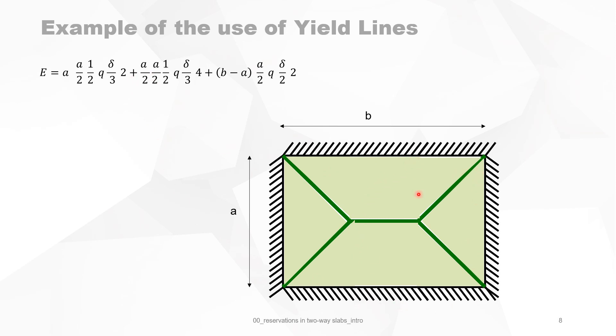What is left over is the rectangular portion, so the mean displacement of a rectangular slab is of course delta divided by 2. We have two of them, and the surface is (B - A) times A/2. So this is the energy of the work done dissipated by the loads.